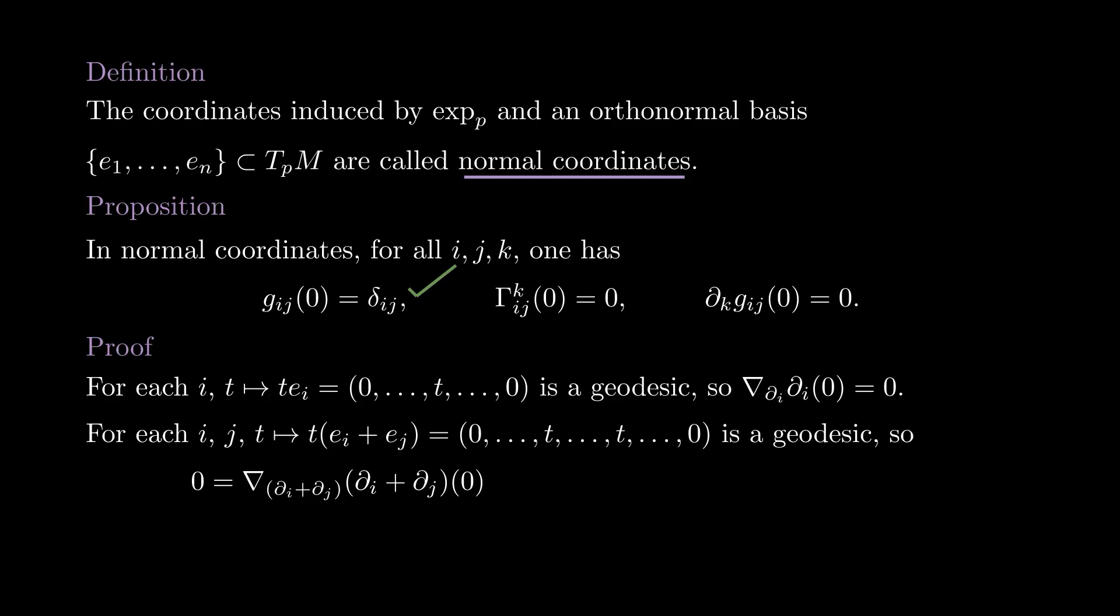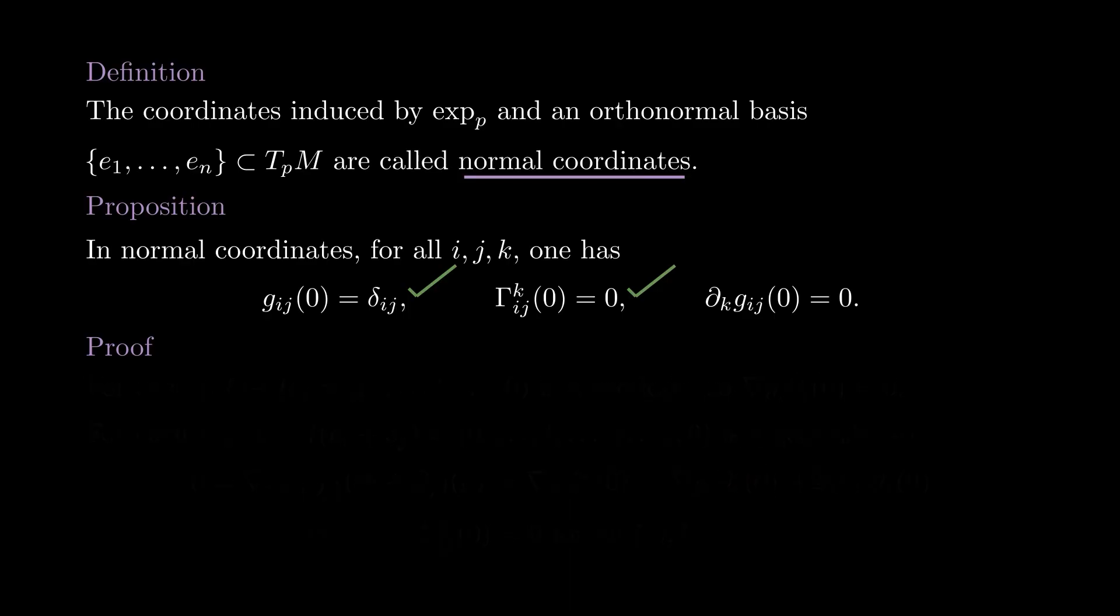Same if we fix indices i and j. When we take the line in the direction ei plus ej, this is again a geodesic, so nabla partial i plus partial j partial i plus partial j is also zero at zero. We can expand this expression and use the fact that nabla partial i partial i and nabla partial j partial j are also zero at zero to get what we wanted to show. Now that we have the second item, the third one just follows from the fact that the connection is compatible with the metric. We expand, cancel, and we're done.